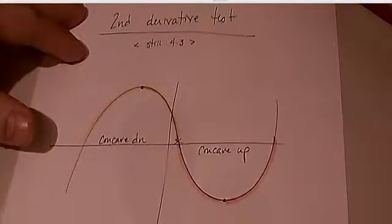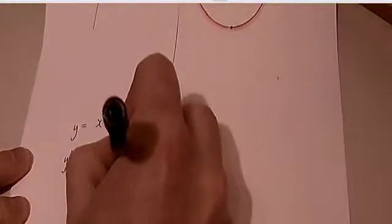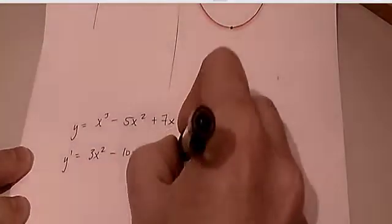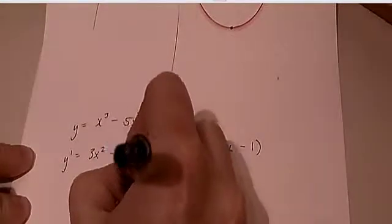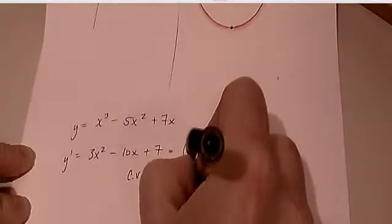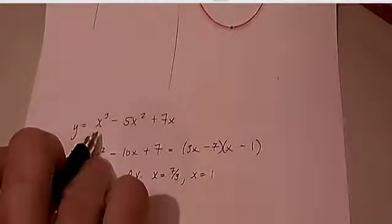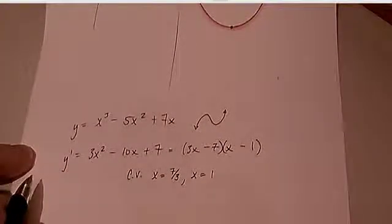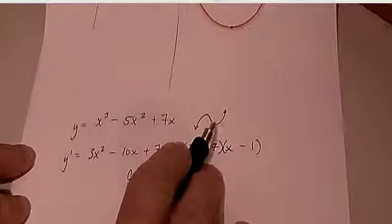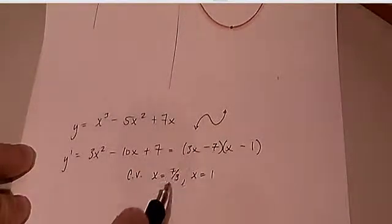Let's do an easy example with a cubic function. Let's say y = x³ − 5x² + 7x. Then y′ = 3x² − 10x + 7. Let's see if that factors — my critical values are x = 7/3 and x = 1. I happen to know this is a cubic with a positive leading coefficient, so the end behavior ensures the graph looks something like this. x = 1 is smaller, so it's the maximum; x = 7/3 is larger along the x-axis, so it's the minimum.